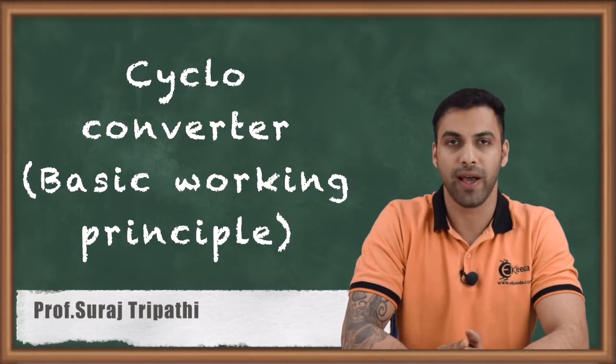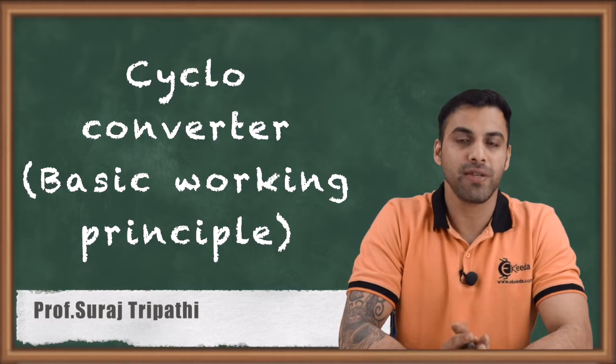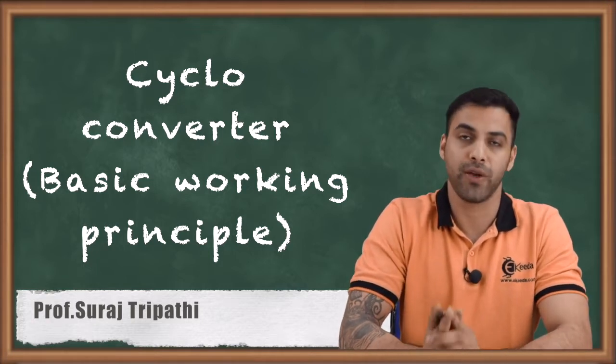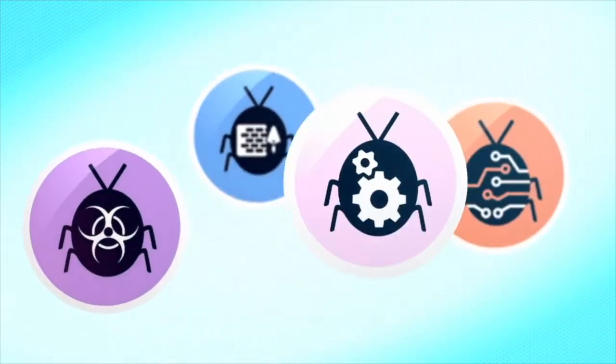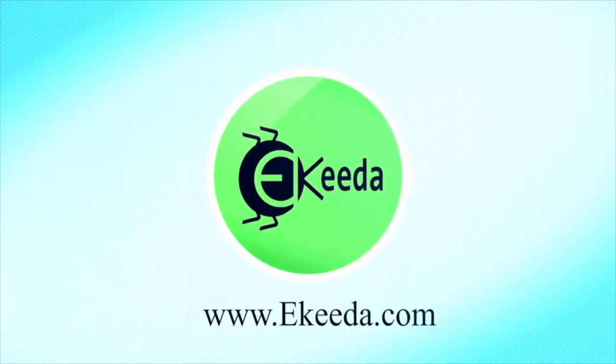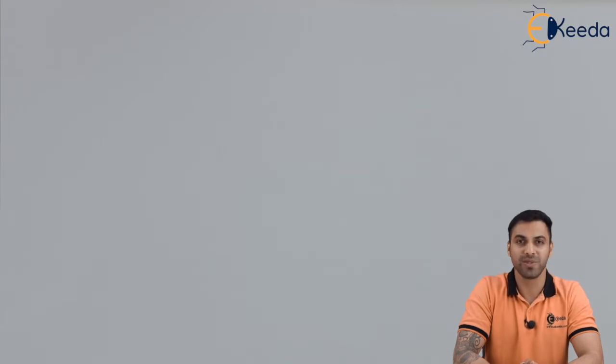A cycloconverter is a device which converts a specific frequency AC voltage to a variable frequency AC voltage. A special thing about a cycloconverter is it never uses a DC intermediate circuit, meaning the AC supply does not need to be converted to DC and then have its frequency controlled. A fixed frequency can be converted to a variable frequency without any DC link or intermediate DC circuit.